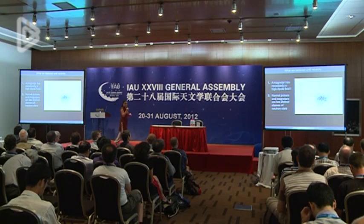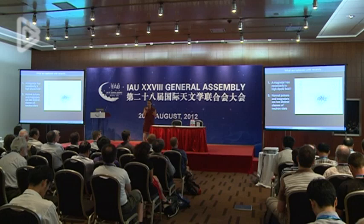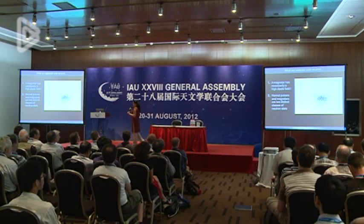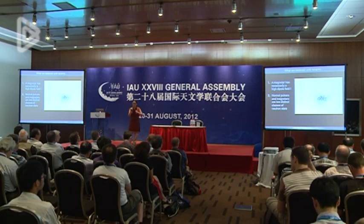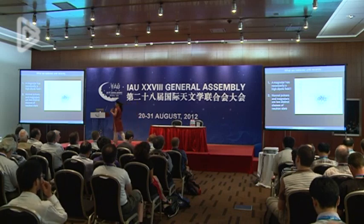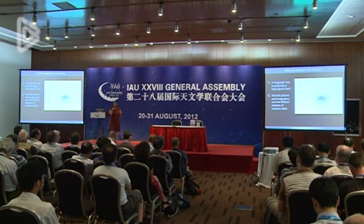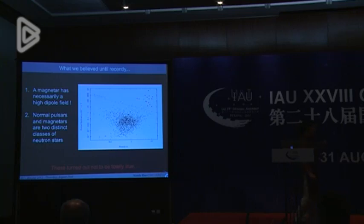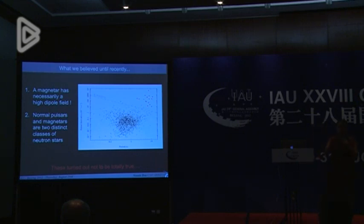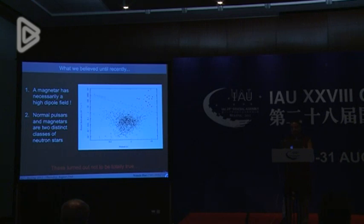What we believed until recently can be summarized in two points: first, magnetars necessarily have a highly dipolar magnetic field — that's what we knew until a few years ago; second, normal pulsars and magnetars are two distinct classes of neutron star with two distinct behaviors. We now know both of these are not true. In the last couple of years, many results show that first, it's not just the strength of the dipole field that makes a magnetar, and second, it's not true that normal pulsars and magnetars are two distinct classes — there is probably a continuum between them.